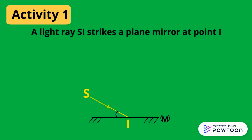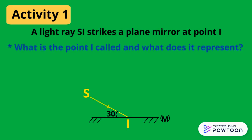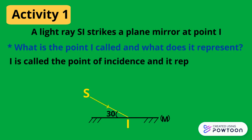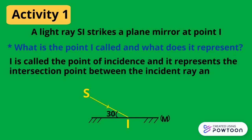Now let's check your understanding. A light ray strikes a plane mirror at point I. What is the point I called and what does it represent? I is called the point of incidence and it represents the intersection point between the incident ray and the plane mirror.